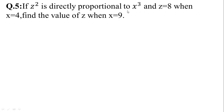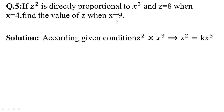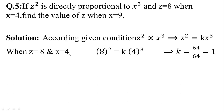In Question No. 5, z squared is directly proportional to x cubed. When z is equal to 8 and x is equal to 4, find the value of z when x is equal to 9. According to the given condition, z squared is equal to kx cubed. When z is equal to 8 and x is equal to 4, putting the values: 8 squared equals k times 4 cubed. 8 squared is 64 and 4 cubed is also 64. This implies that k is equal to 64 divided by 64, so k is equal to 1.